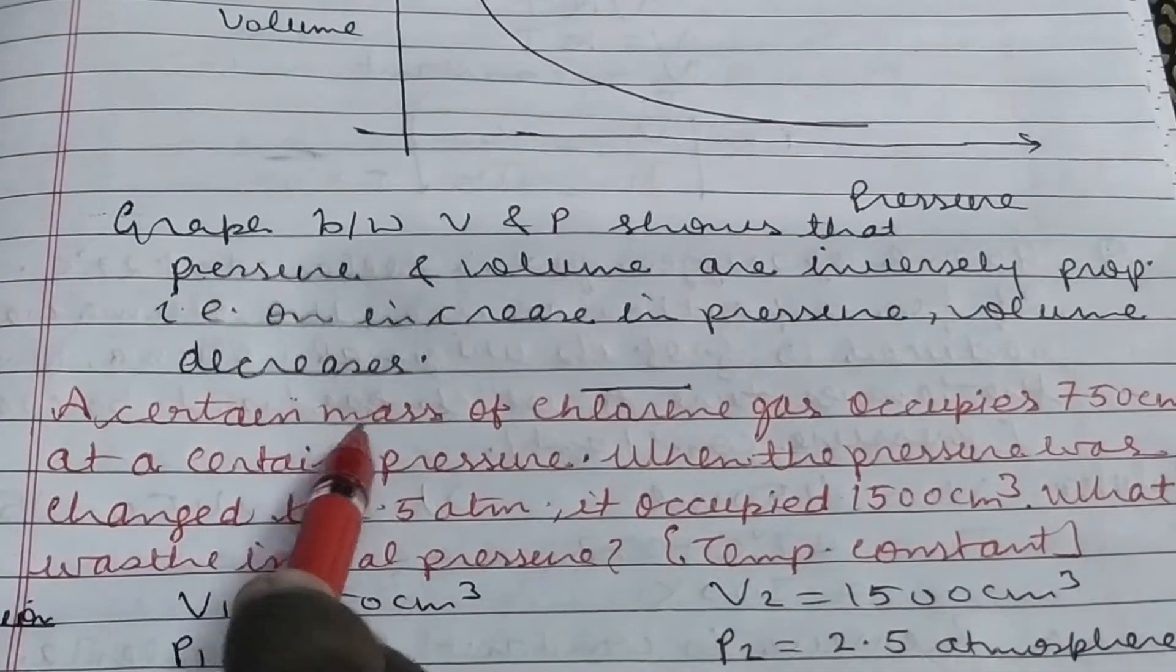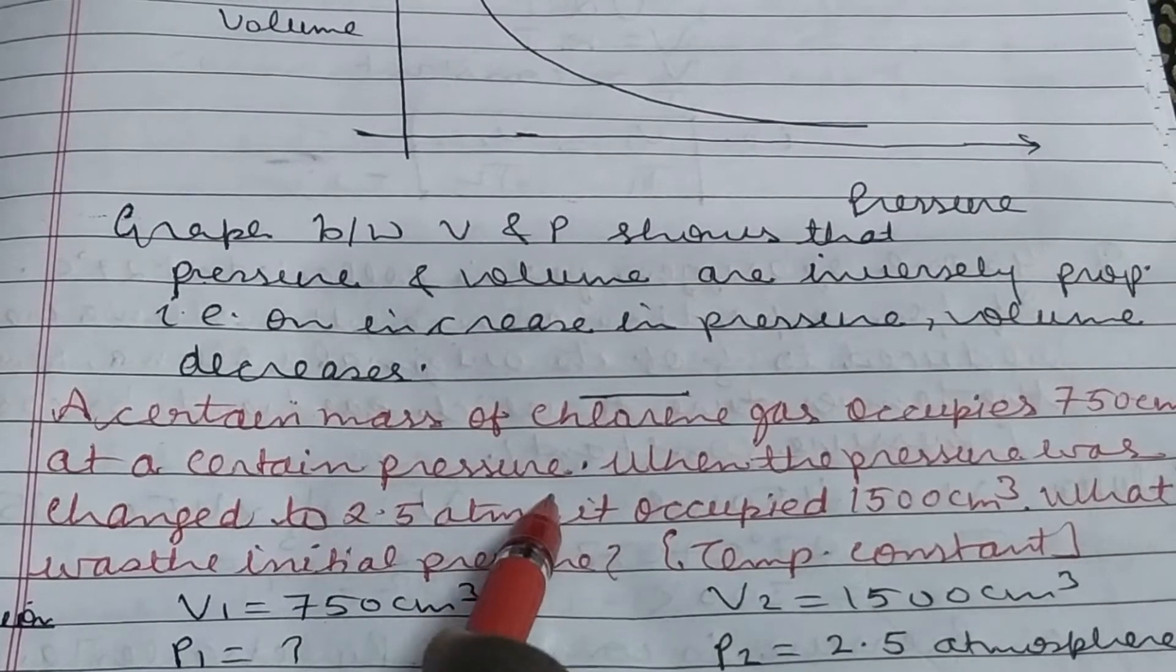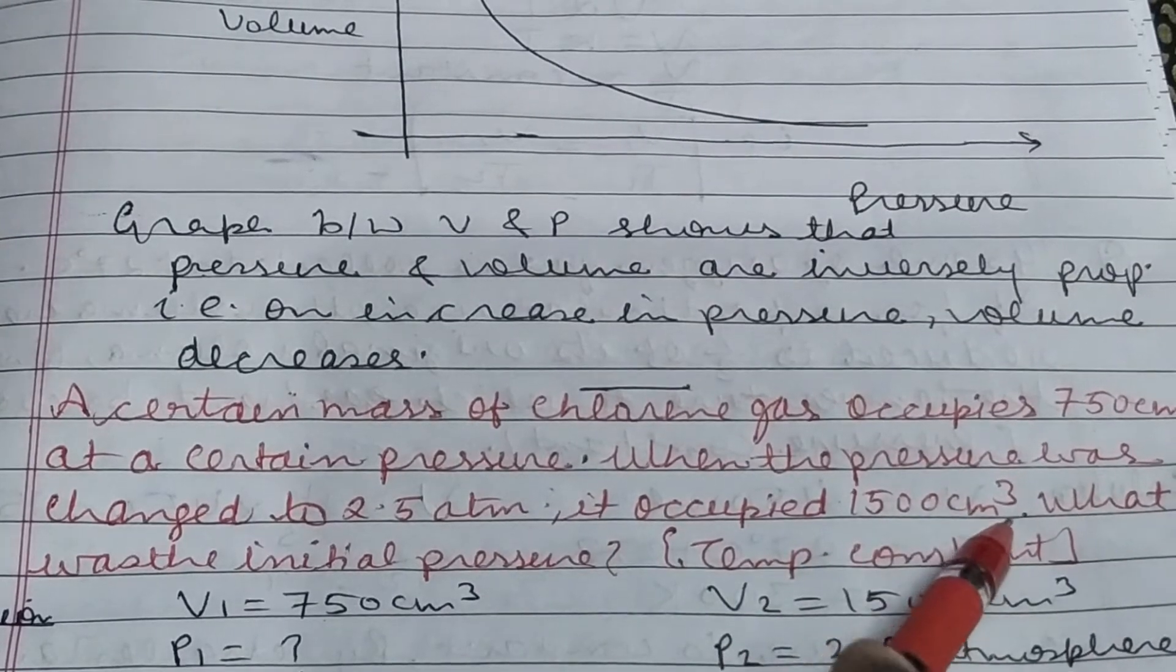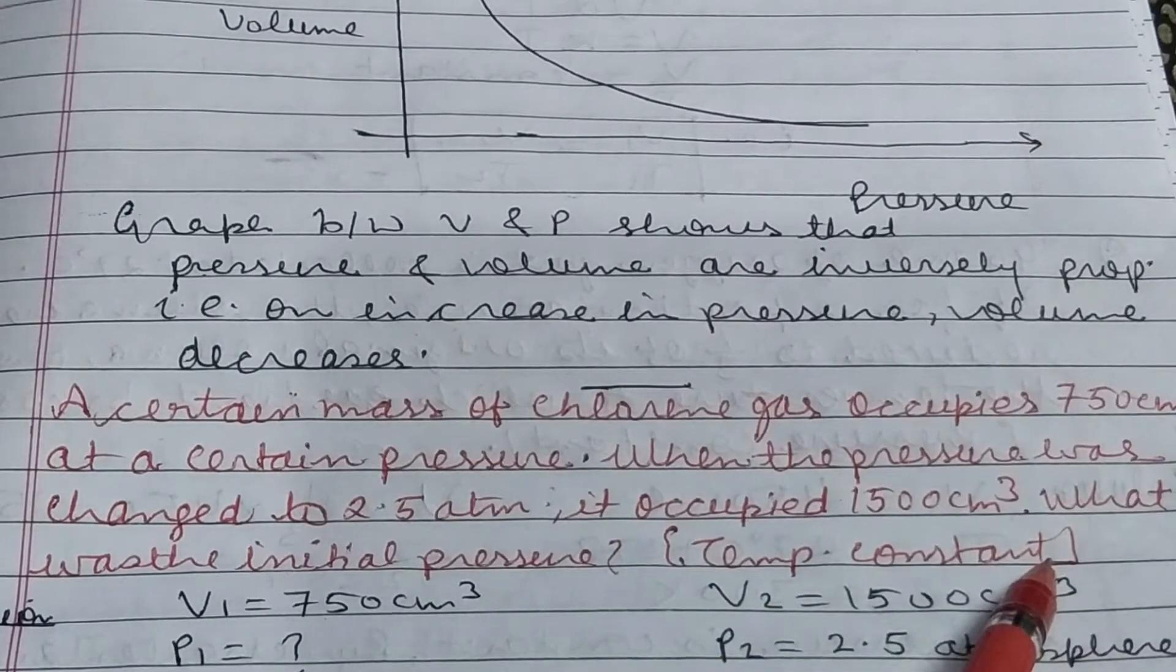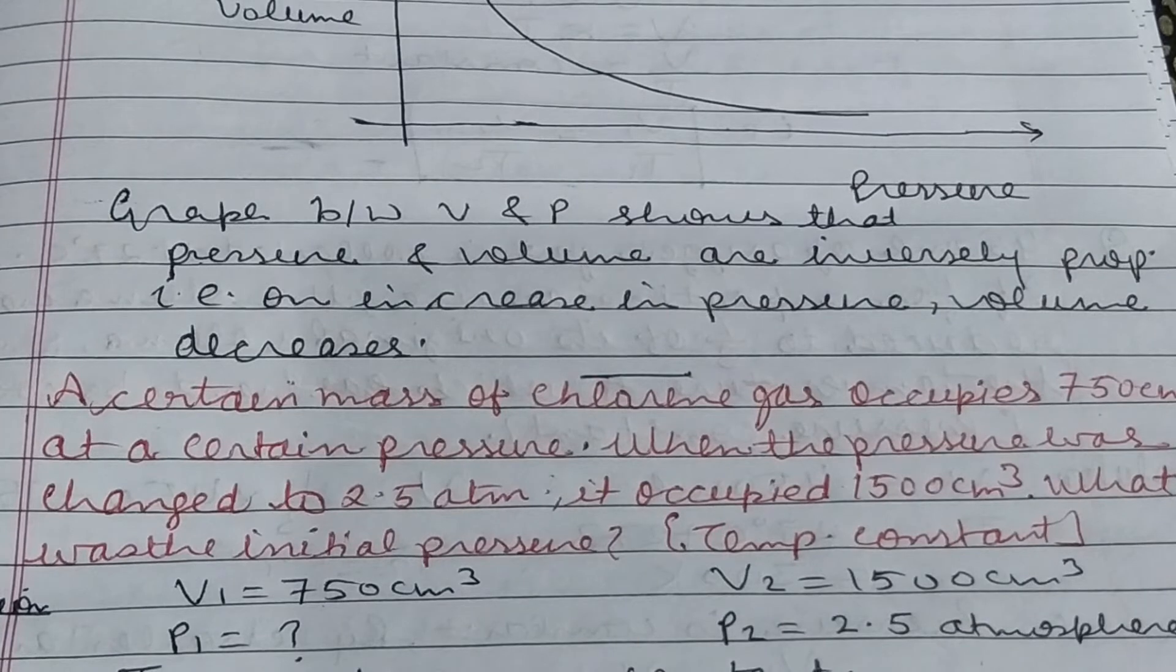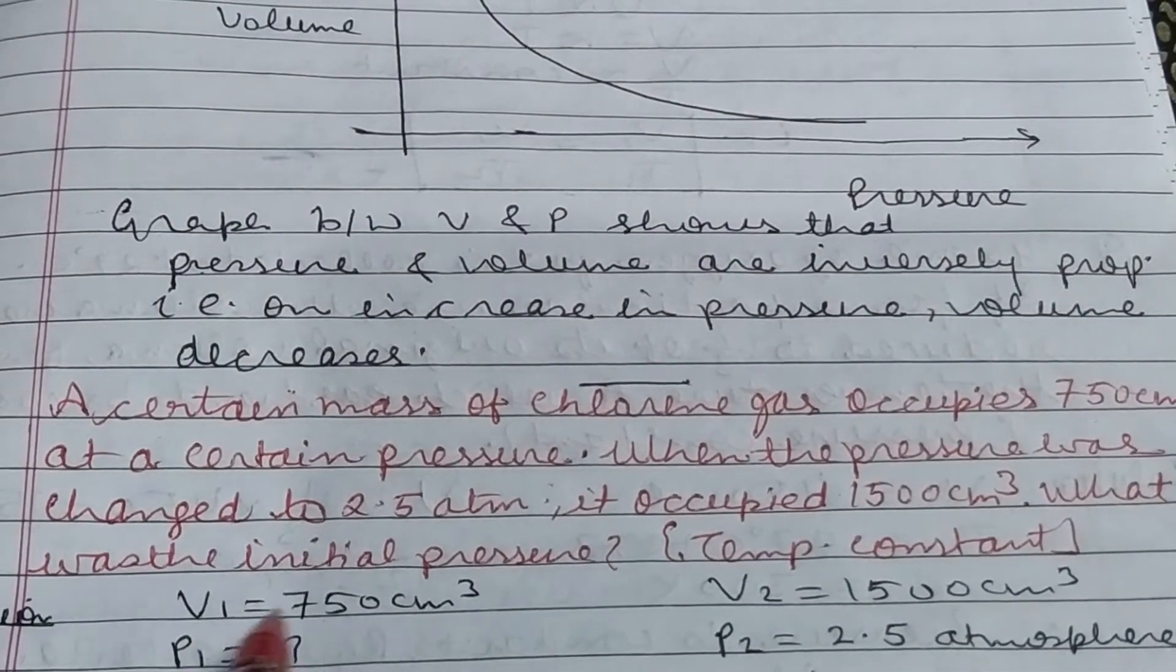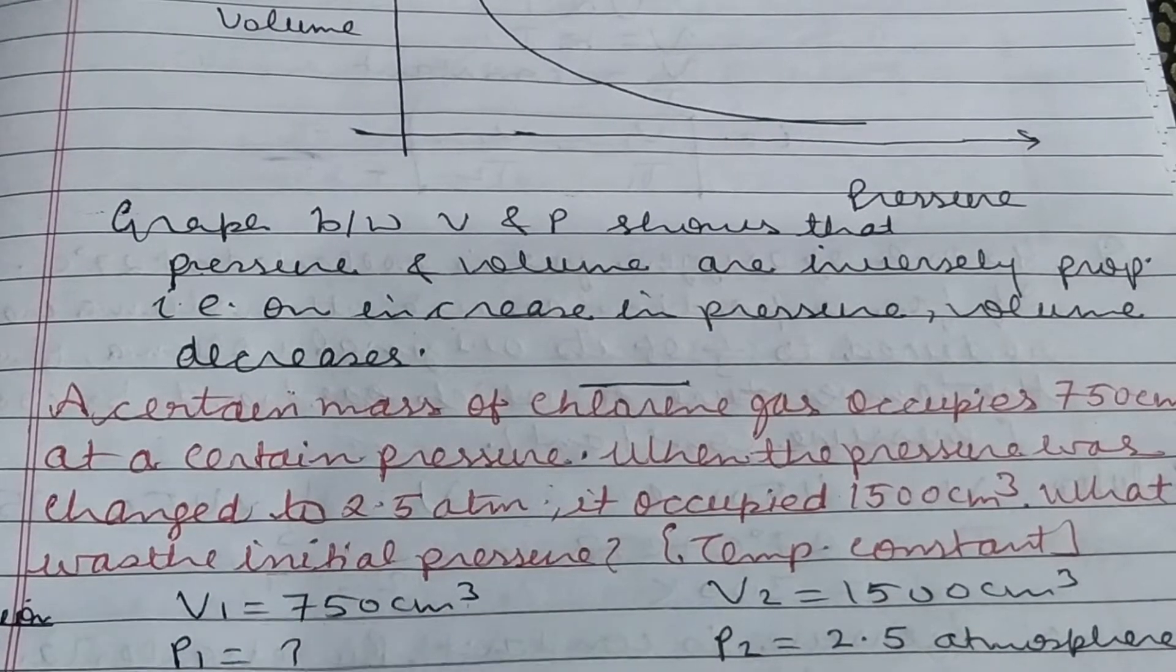In this question, a certain mass of chlorine gas occupies 750 cm³ at certain pressure. When pressure changed to 2.5 atmosphere, it occupied 1500 cm³. What was the initial pressure? Temperature is constant, so it obeys Boyle's law. First, write the data in symbolic form: V1 is 750 cm³, P1 is unknown.